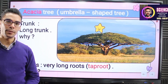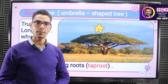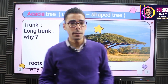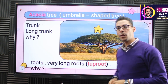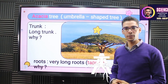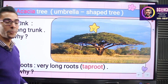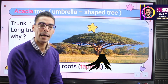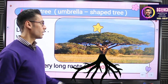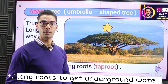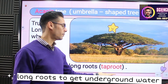The next part is really important — do you see the roots? The roots are underground, that's normal. But how long are these roots? There is not much water on the surface, so how can the tree adapt? By having very deep, long roots underground to catch water from underground. We call these tap roots.